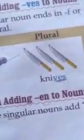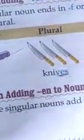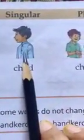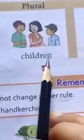To make them plural we have to add EN. Now let's see an example. This is a child — singular form. And to make it plural, we will change it into children. We will add EN in it.